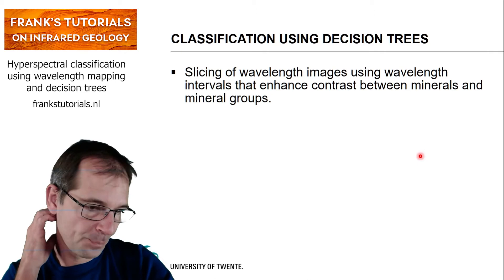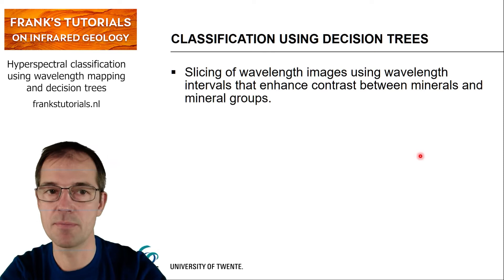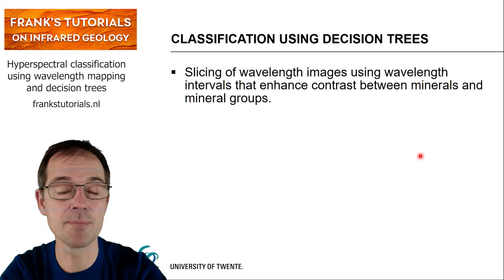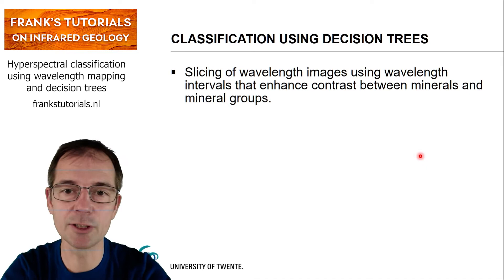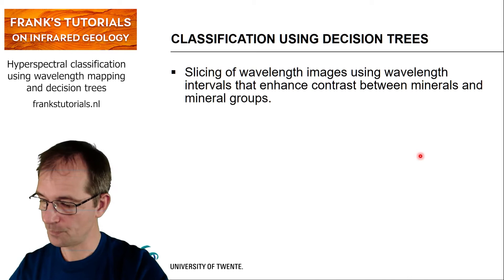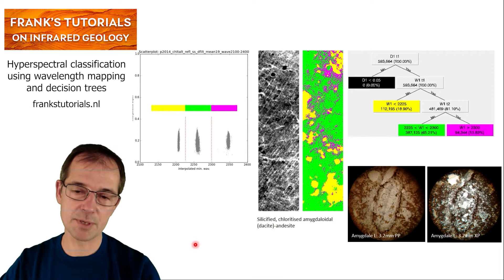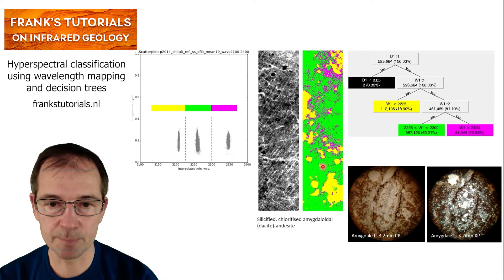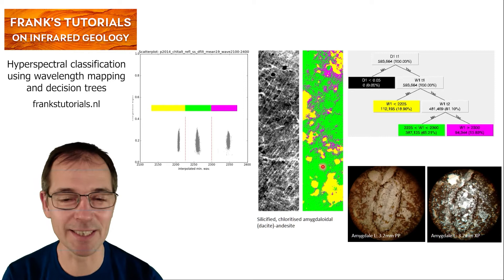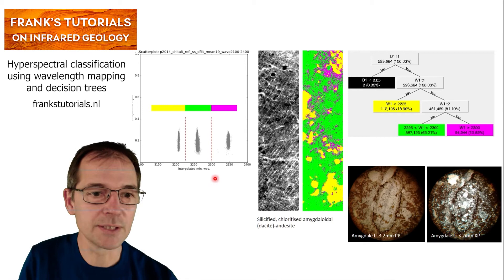We want to go further — not only a wavelength map but also a classification that addresses some of those limitations. What we can do is slice the wavelength images using wavelength intervals that enhance the contrast between minerals and mineral groups. Here we have the same image of the same rock: a depth image and a wavelength image. Let's go to the scatter plot to make it clearer.